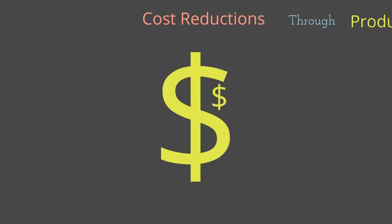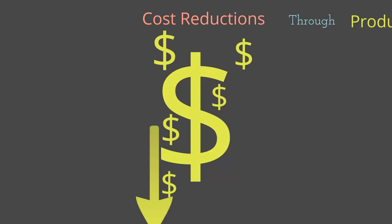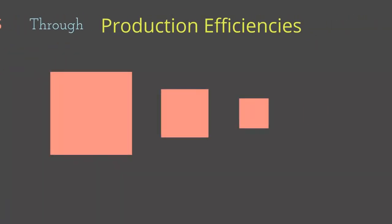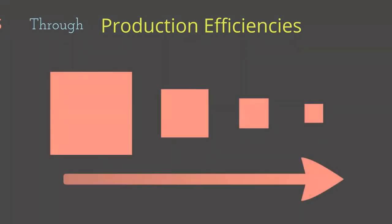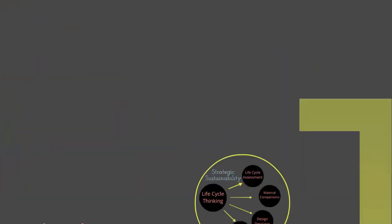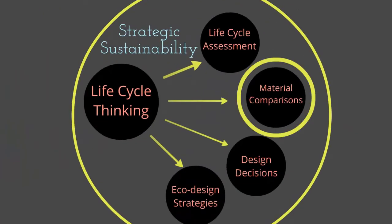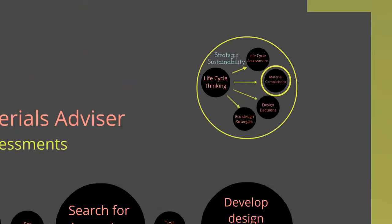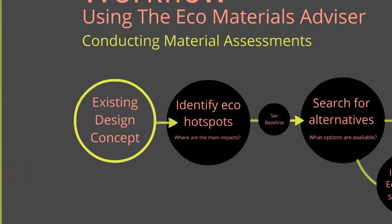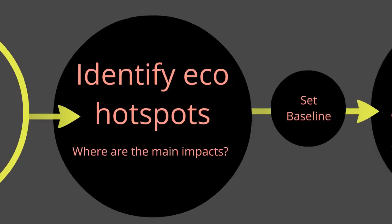Often the changes made as a result of employing eco design strategies can reduce cost and increase product design efficiencies. Combined with the use of a materials assessment tool, such as the Eco Materials Advisor, it allows for informed design reviews to be developed and simulated.